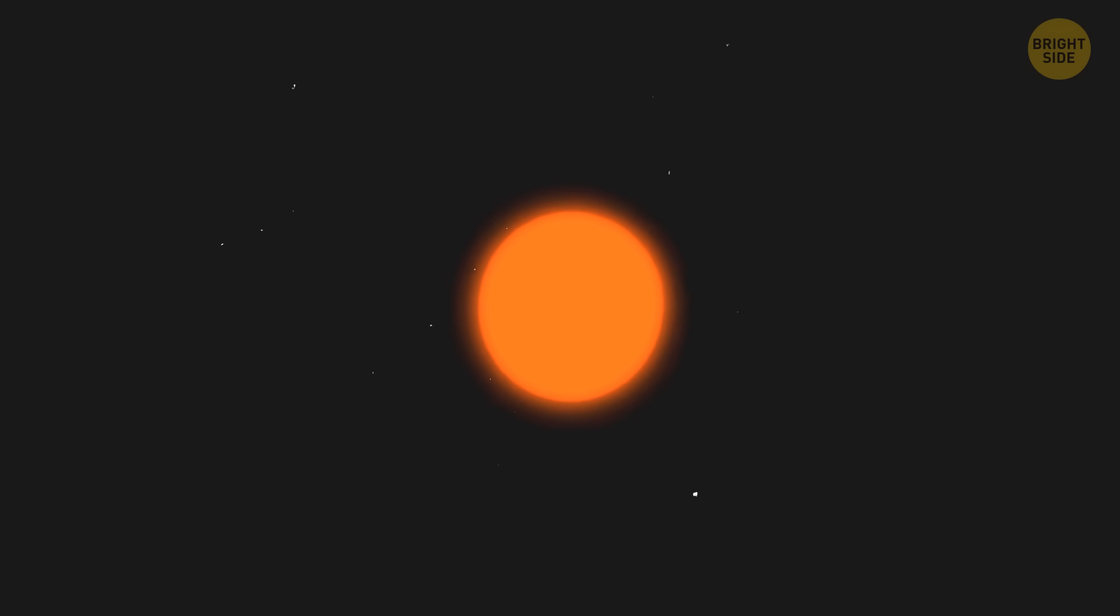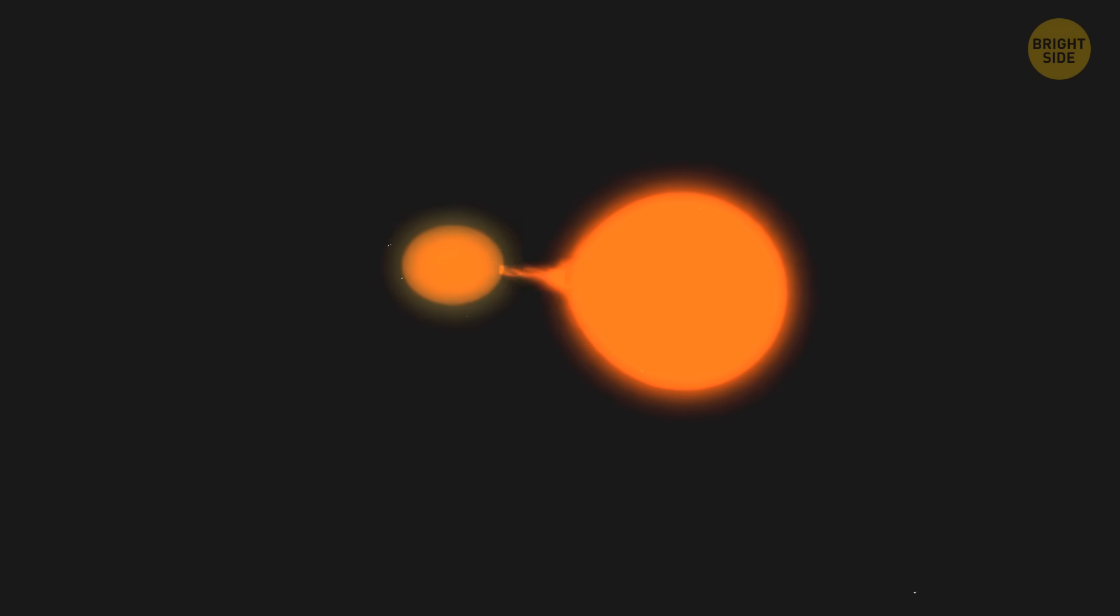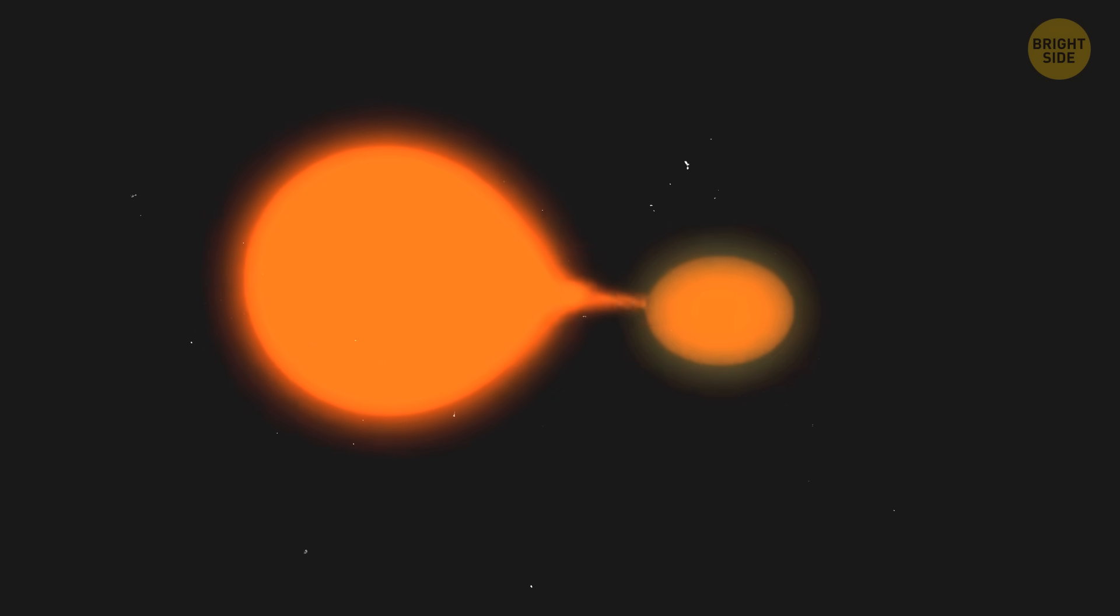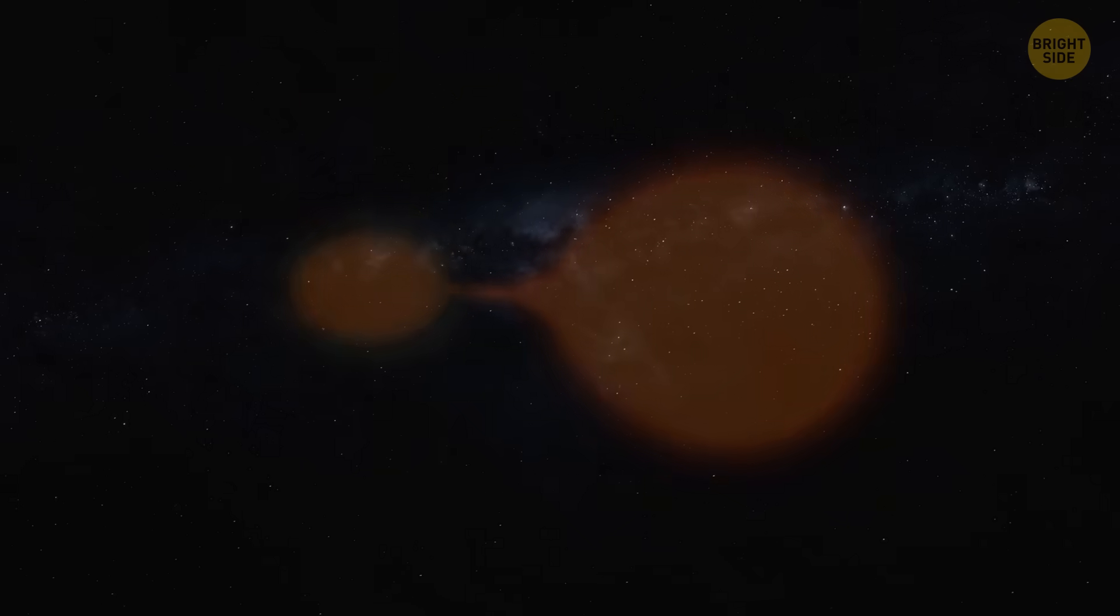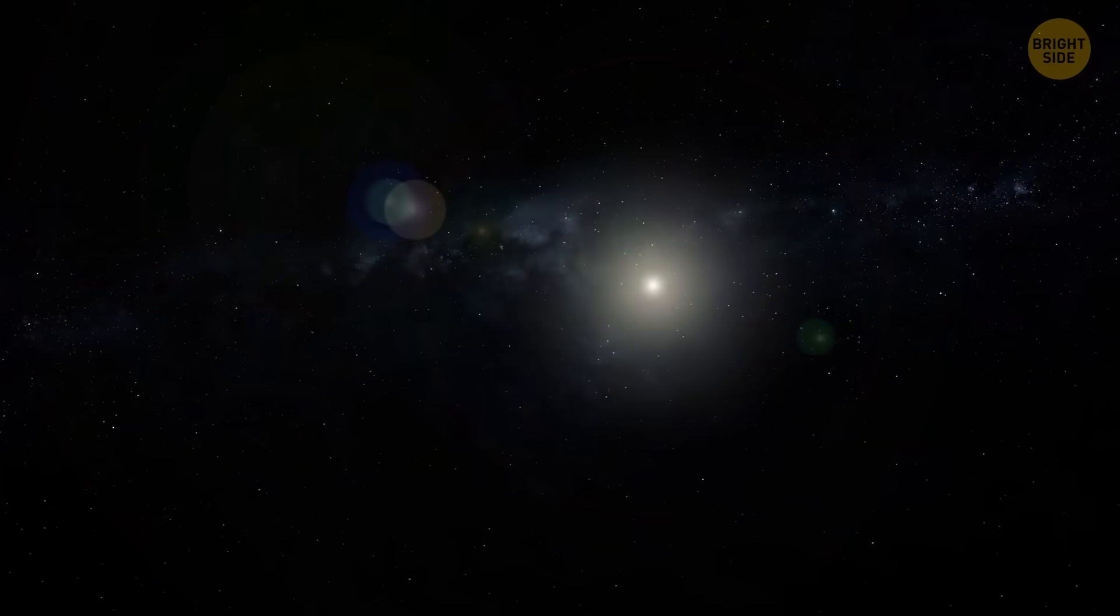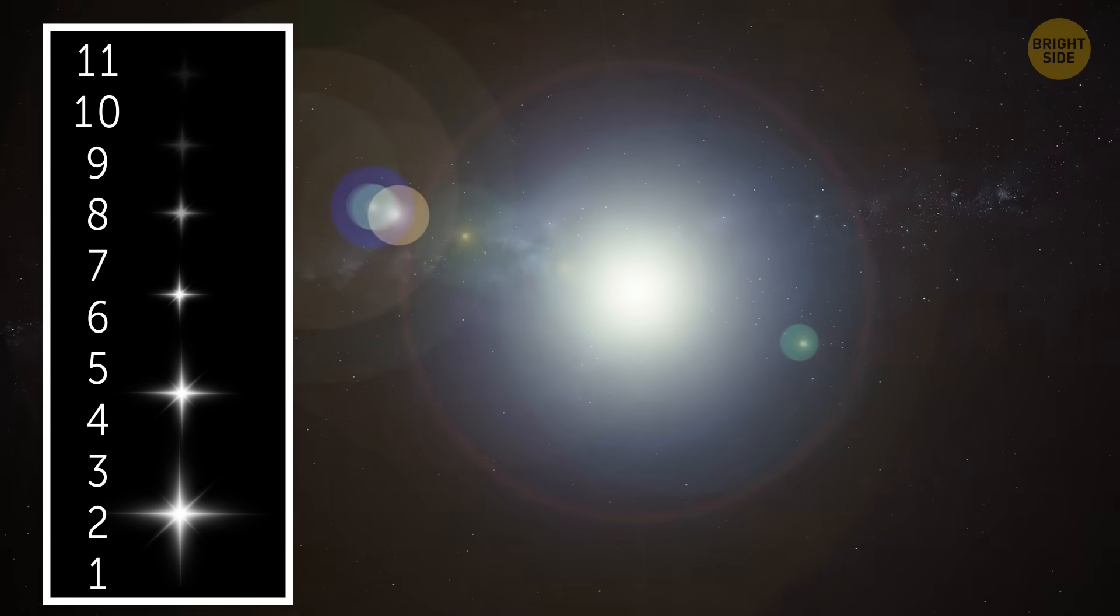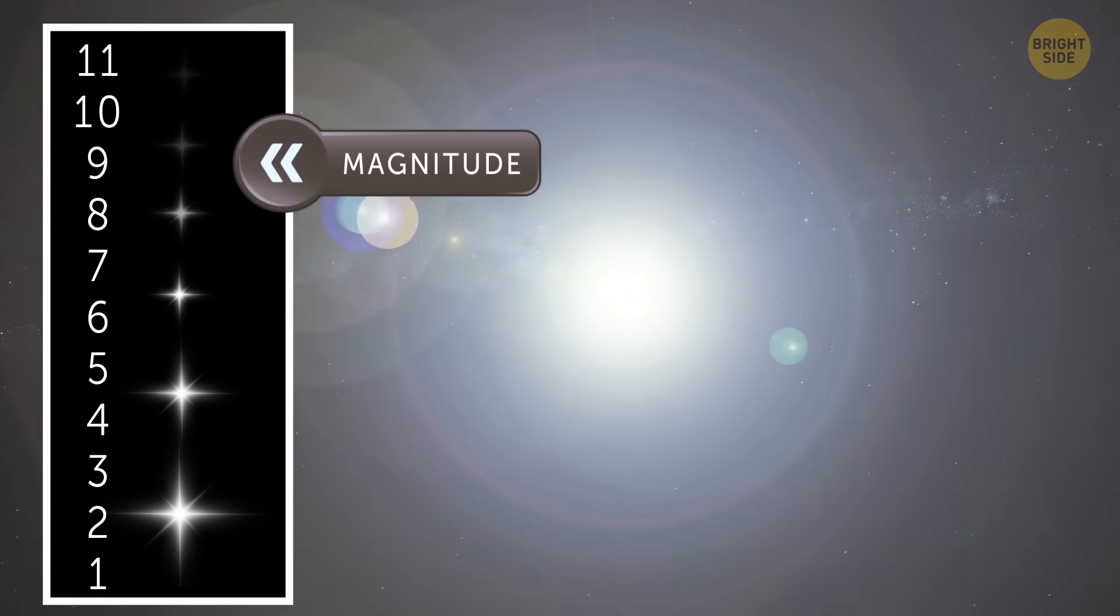The companion star, an aging red giant, has already expanded so much that it's dumping its material onto the white dwarf. So it's time for another explosion for these two. It's going to take the star's brightness from magnitude 11 to magnitude 2.